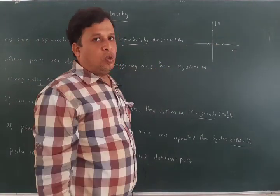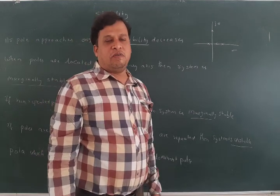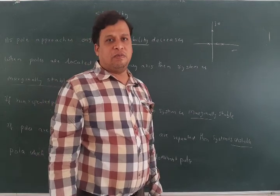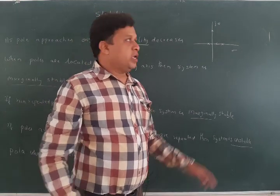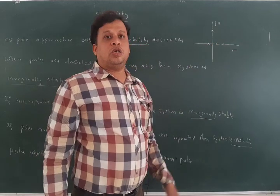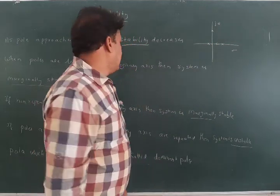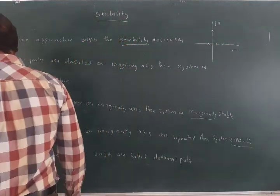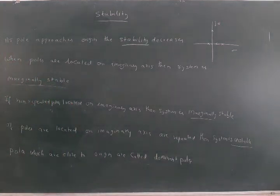Suppose we have some poles from the characteristic equation — after solving we get some poles — and those poles are near to the origin; they are called dominant poles. Now we will classify the system based on how it is stable and marginally stable.